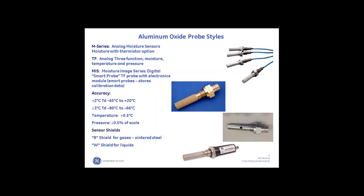With the analog sensors, you have to enter the data into the analyzer. When you purchase one of these sensors, you're given a table of dew point versus impedance data that is entered into the analyzer. These sensors have very good accuracy: plus or minus two degrees dew point above negative 65°C, and below negative 65°C the accuracy opens up to three degrees C. We also equip them with various shields — the R shield is a sintered metal protection, and the W shield has a hole in it, stainless steel, enabling organic liquids to have intimate contact with the sensor.